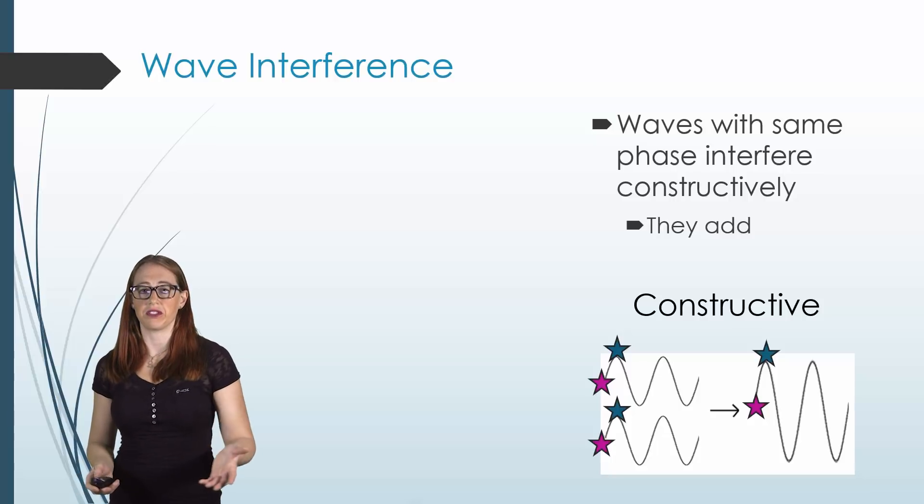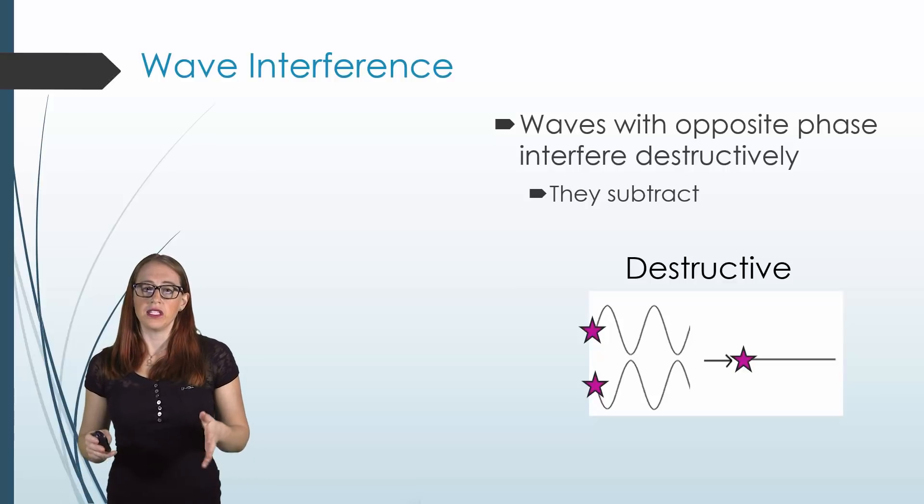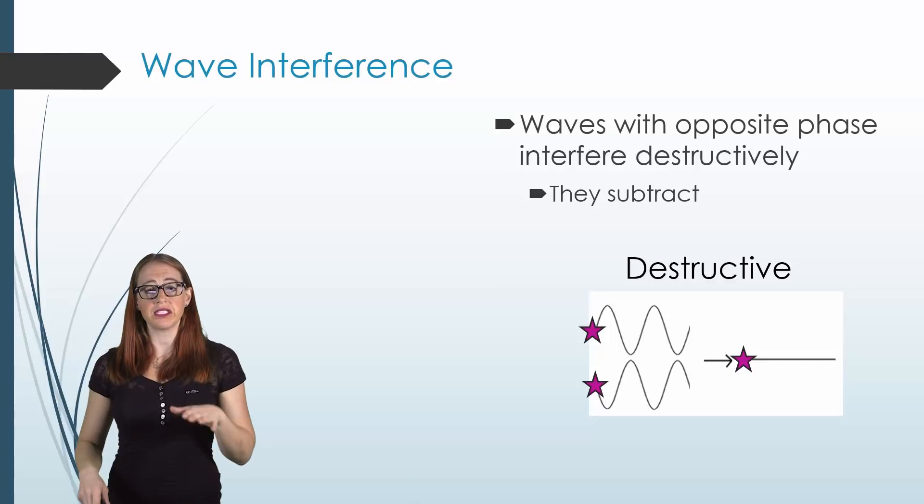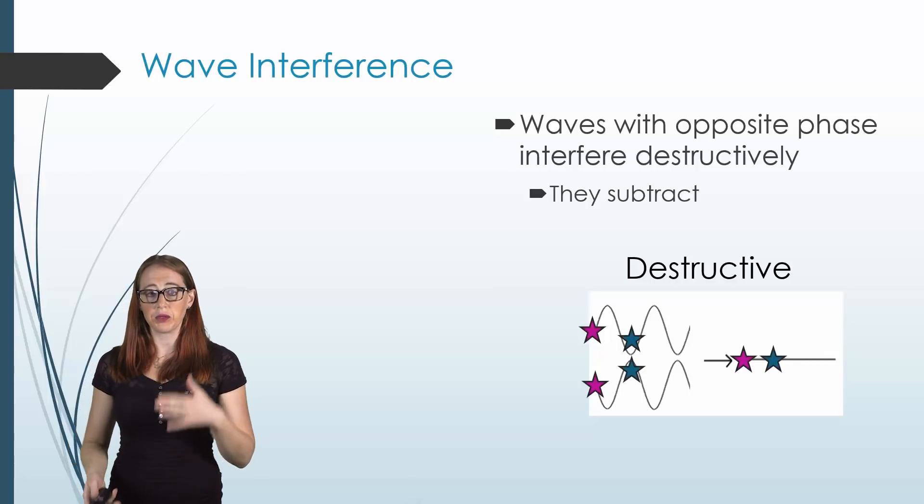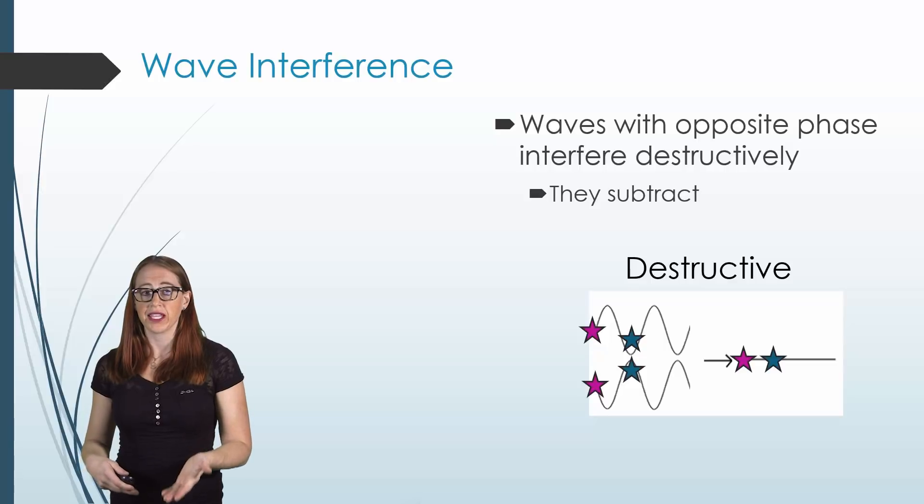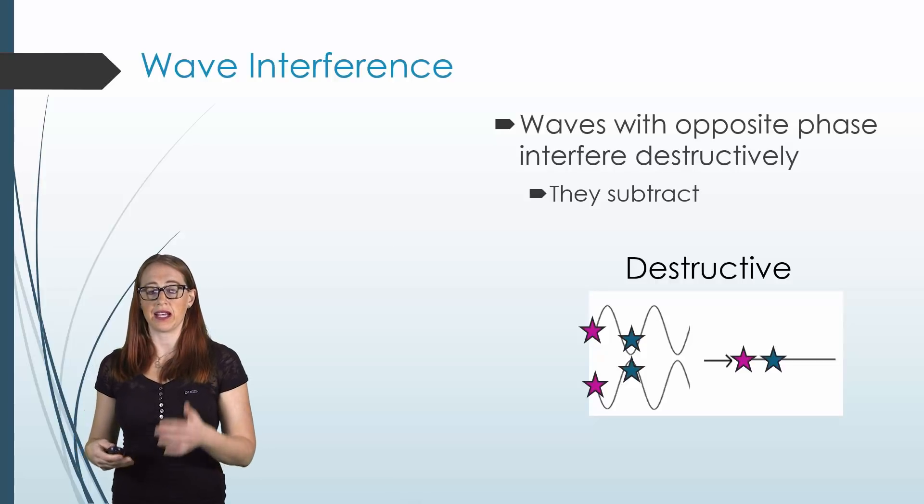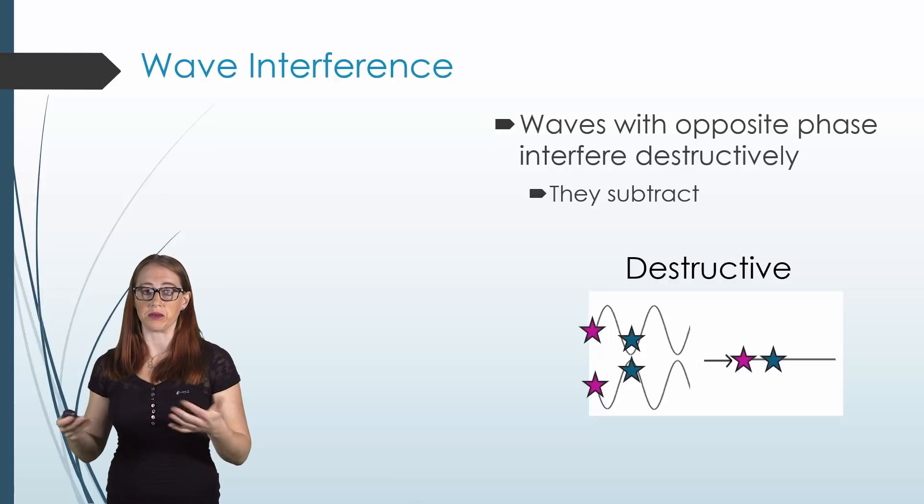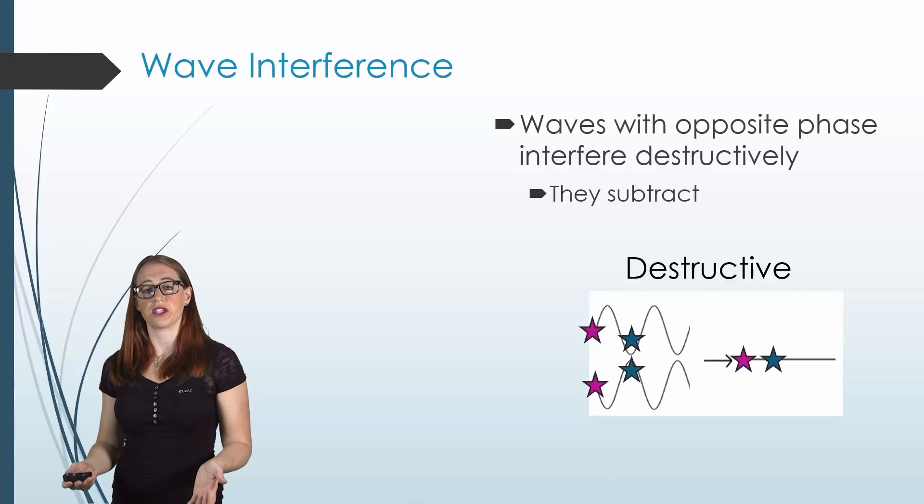There's another kind of interference though, and that's destructive interference. This happens in a way where the wave cancels out. In this example, not only does the first data point still add to zero, but if you look at the second one, so does that. If we once again arbitrarily can call the peak one and the trough negative one, you can see that a peak and a trough are going to add together to equal zero. This is called destructive interference.